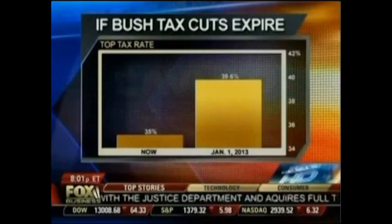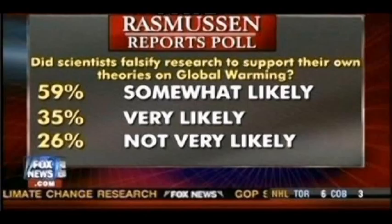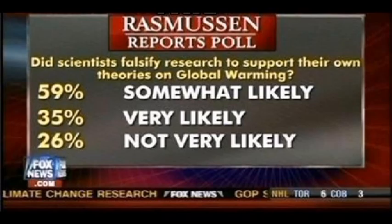Another tactic is where the numbers just don't add up. It happens all the time on Fox News — they put up a poll where the percentages don't add to 100 percent. Sometimes this is because people are asked to check all that apply, which makes the percentages less valuable. It can also be used to make it seem like there is overwhelming or underwhelming support for something. For example: scientists thought to falsify research to support their own theories on global warming — 59 percent say it's somewhat likely, 35 percent say not very likely, 26 percent say not very likely. It just doesn't add up.